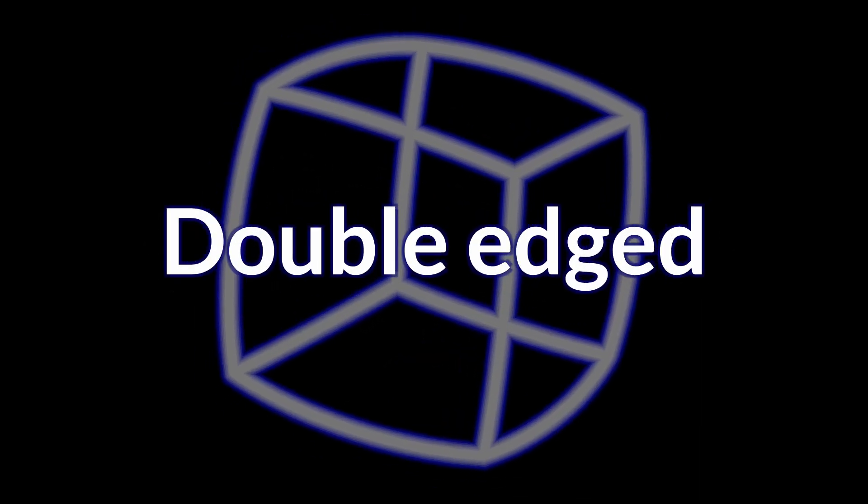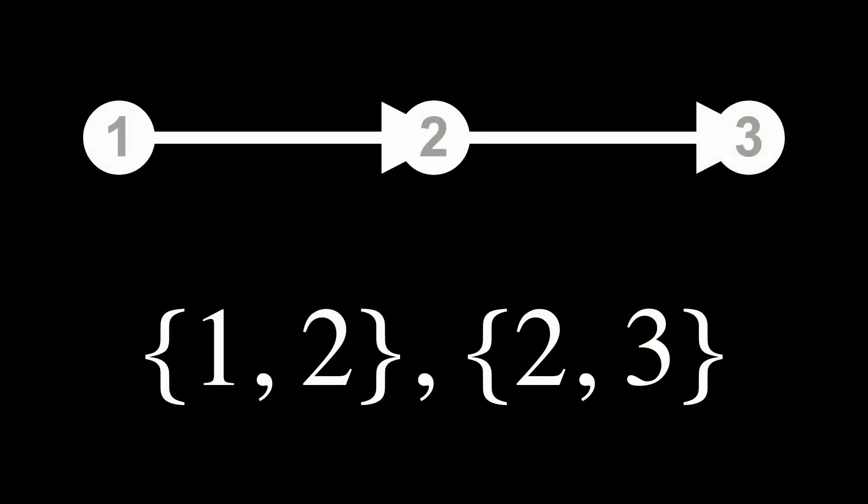Now let's show both edges. Here they are represented visually as an arrow from node 1 to node 2, and another arrow from node 2 to node 3. And here they are represented numerically as 1, 2, 2, 3. I've just shown you that {1, 2, 2, 3} is a perfectly valid numerical representation of a graph with two edges: a binary edge from node 1 to node 2, and a binary edge from node 2 to node 3.